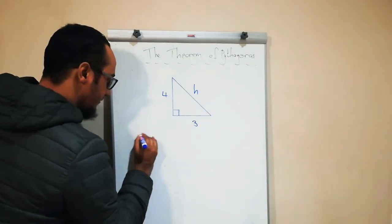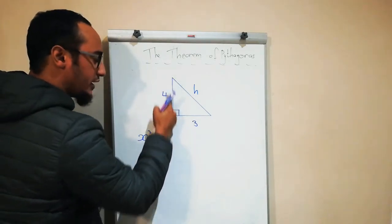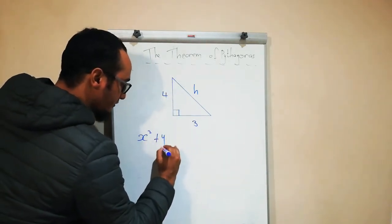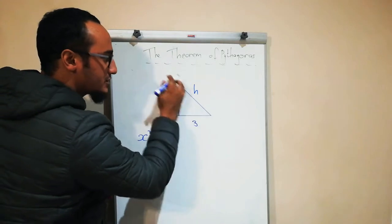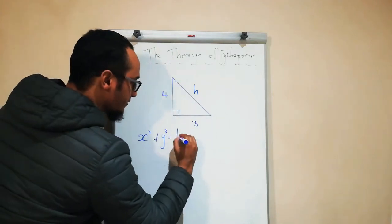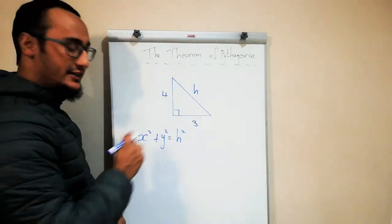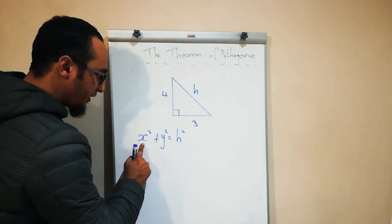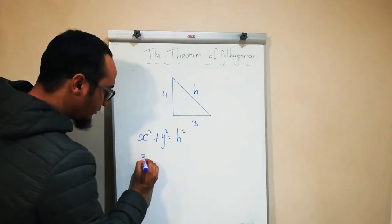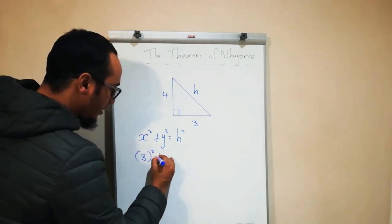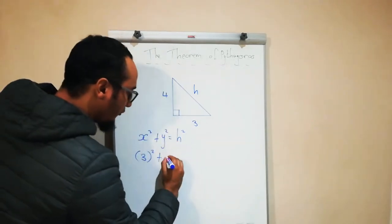I said x squared plus y squared equals my longest side, and that is my hypotenuse. From there I substitute. What's the value of x? Three. Don't forget to square it. What's the value of y? Four. Don't forget to square it, and that will be equal to h squared.